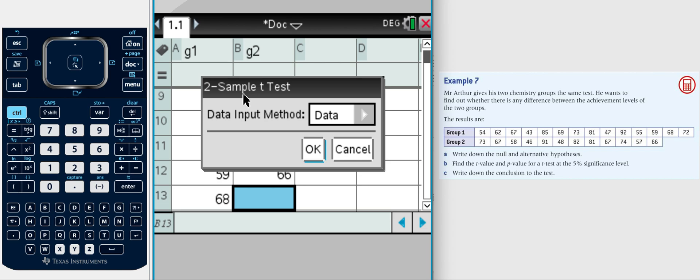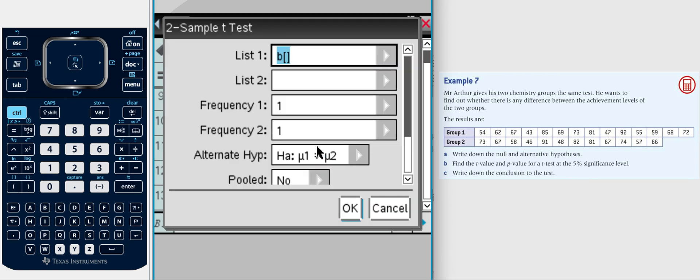We've got that data input method. Have we got the data or have we got the statistics behind the data? In this case we have the data so we're going to click okay. Here's a wizard. List one, we were sensible and we called that G1. List two, that's our second list G2. Frequency of each is one.